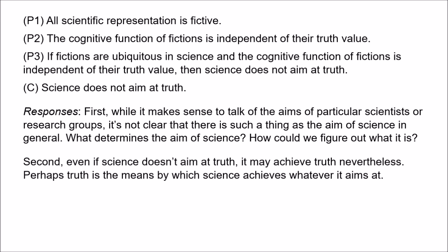Indeed, the realist would probably want to say that truth is the means by which science achieves whatever it aims at. So truth isn't a mere byproduct — it's involved in realising the aims of science. For example, if we say that the aim of science is the prediction and control of observable phenomena, the realist would probably say that science achieves this by means of truth, because true theories permit better prediction and control of observable phenomena. So it's very unclear how the fact that science doesn't aim at truth is much of a problem for a realist approach to science.